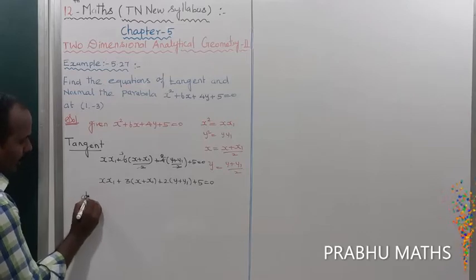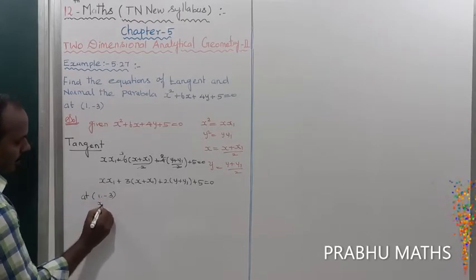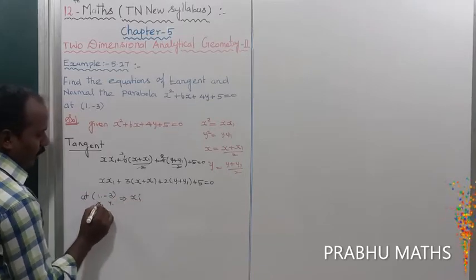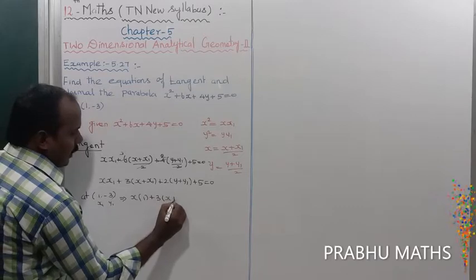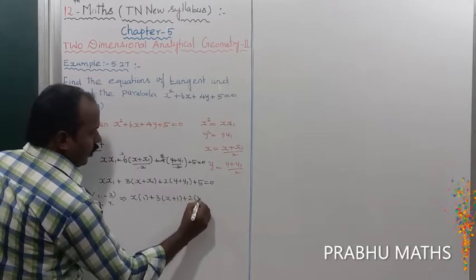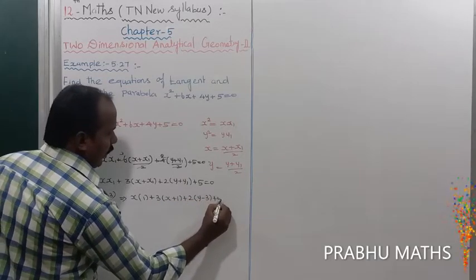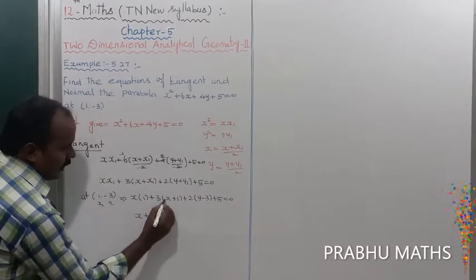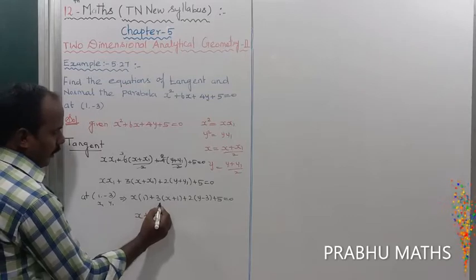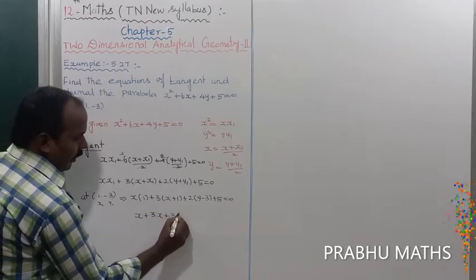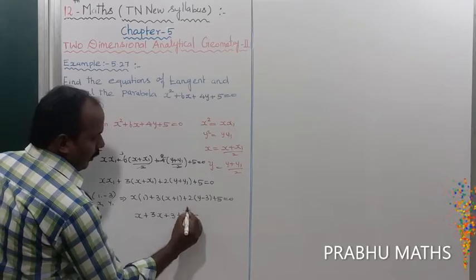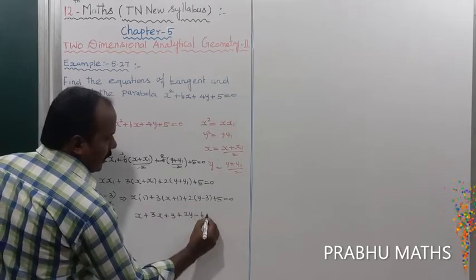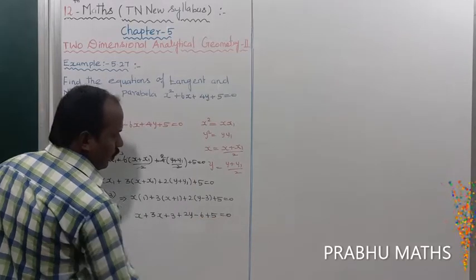The point is given as (1, -3), so x₁ = 1 and y₁ = -3. Substituting: x·(1) + 3(x + 1) + 2(y + (-3)) + 5 = 0, which gives x + 3x + 3 + 2y - 6 + 5 = 0.